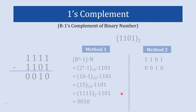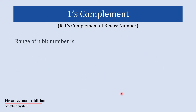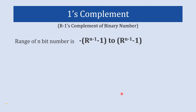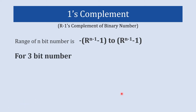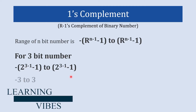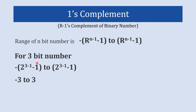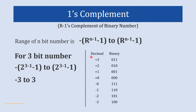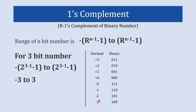Using 1's complement with an n-bit number, you can represent numbers in the range from minus (2 raised to n minus 1, minus 1) to (2 raised to n minus 1, minus 1). For a 3-bit number, the range is from minus 3 to plus 3. From this table you can have a clear idea about the entire range of a 3-bit 1's complement representation.